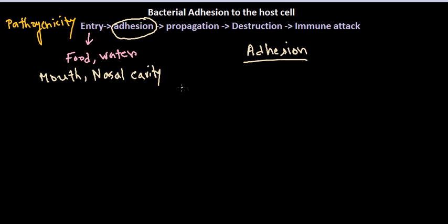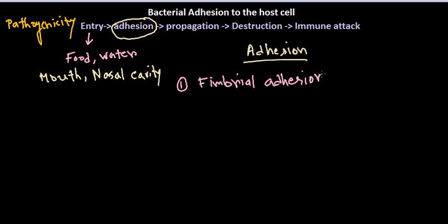The first process of adhesion is via fimbrial adhesion. Fimbrial adhesion means the adhesion is accomplished due to the presence of fimbriae or pili. With the help of these pili — which are surface extensions or cytoplasmic extensions of bacterial cells — the bacterium can attach to the host cell.